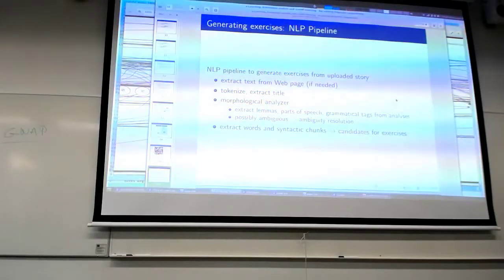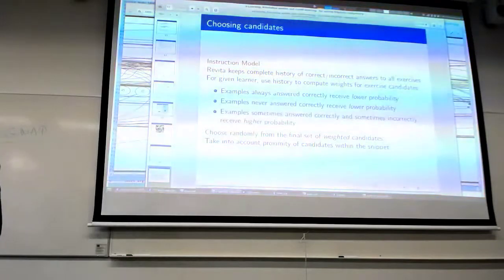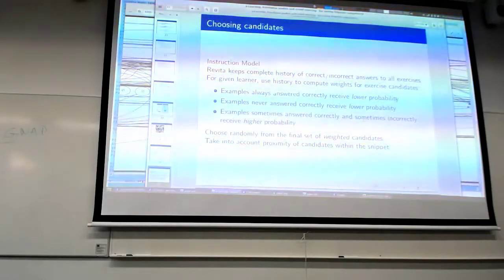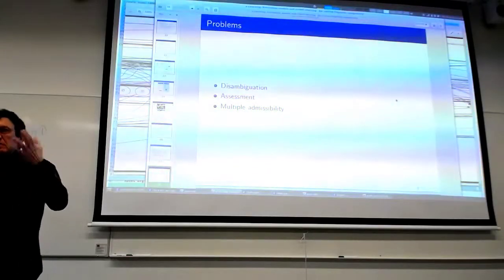There's a big NLP pipeline — lots of NLP components that tear the text apart. The instruction model keeps a complete history of correct and incorrect answers. For a given learner, we use the history to compute weights for exercise candidates.